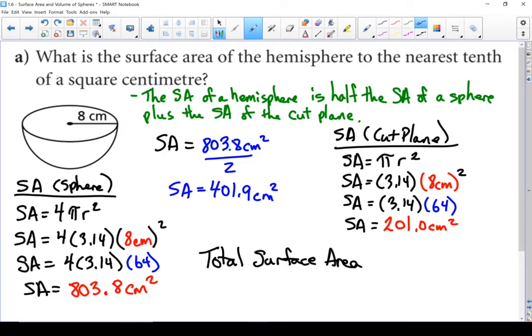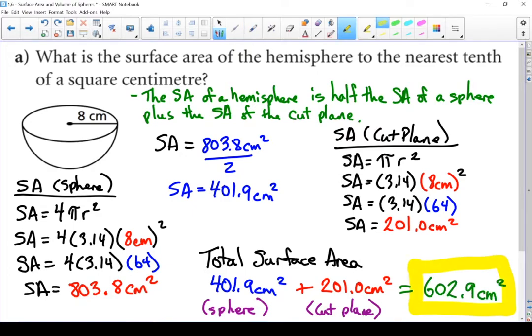So from the half sphere part, we've got 401.9 square centimeters. And from the cut plane, we've got 201 square centimeters. That leaves us with a total of 602.9 square centimeters. And there is the surface area of our hemisphere.